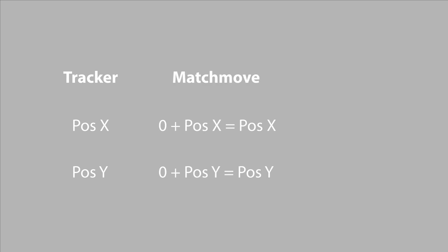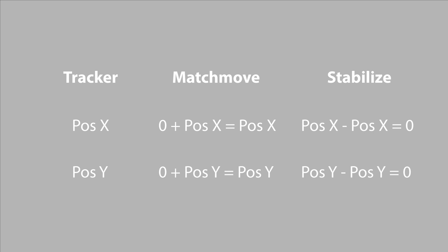Let's just recap the maths of what we're doing here. The tracker has the 2D position of the top of the staff on every frame. To match move something that is at 0,0 already to the top of the staff we just need to add the position of the staff in x to the x translate of the object, and the position of the staff in y to the y translate of the object. To stabilize the tip of the staff around 0,0 we need to subtract the position of the staff from the image. Because we are subtracting the position of the staff from itself this will give us a result of zero, so the staff will be moved to the bottom left corner of the image on every frame. But in both these examples we are limited to either moving something to or from the lower left corner of our format, which isn't very useful.